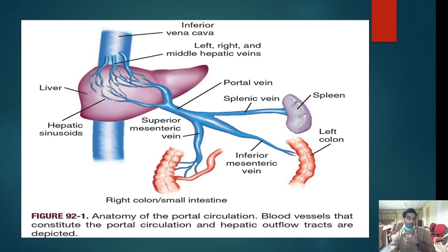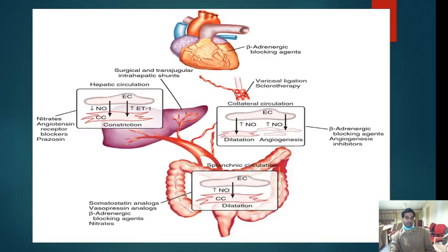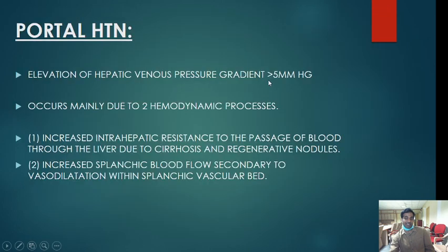From the inferior vena cava you go to the hepatic veins. First you measure the free hepatic venous pressure. Then you send a balloon to clamp the hepatic vein completely and measure the hepatic venous wedge pressure. The difference between the hepatic venous wedge pressure and the hepatic venous free pressure is the hepatic venous pressure gradient. If this is greater than 5 mmHg, it is labeled portal hypertension.